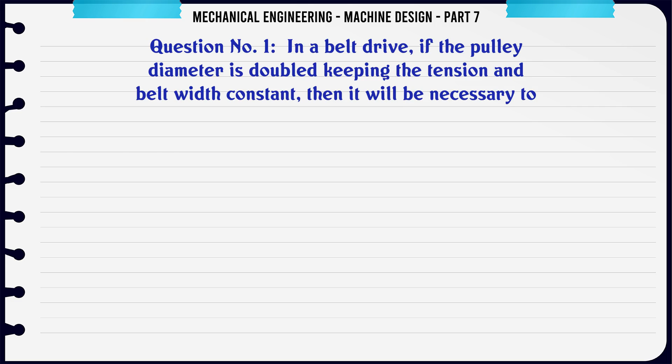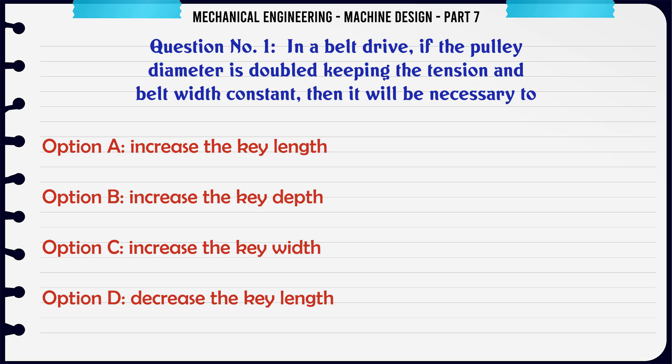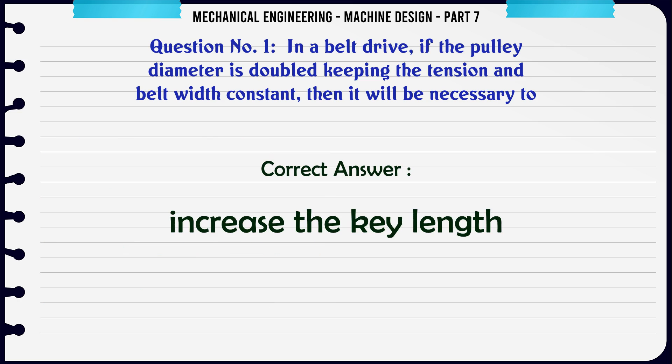In a belt drive, if the pulley diameter is doubled keeping the tension and belt width constant, then it will be necessary to: a) increase the key length, b) increase the key depth, c) increase the key width, d) decrease the key length. The correct answer is: increase the key length.